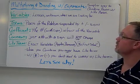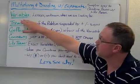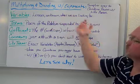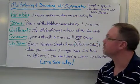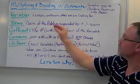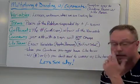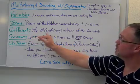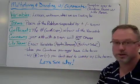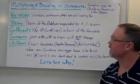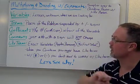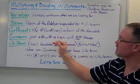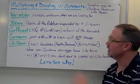Some of the terms that I want to go through with you today are variables. Again, these are letters, they're unknown, and it's what we're looking for in the equation. Terms are parts of the problem that's separated by the plus and minus signs. Coefficient is the number with the sign, positive or negative, in front of the variable. Our constant is just a number with a sign, positive or negative, and it will not change.